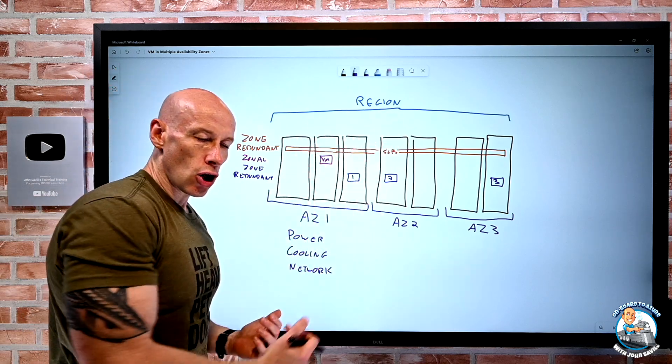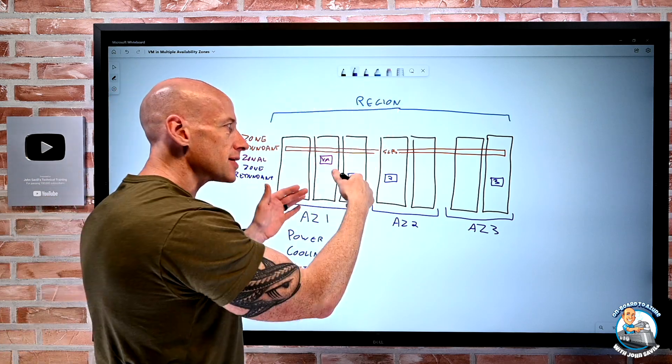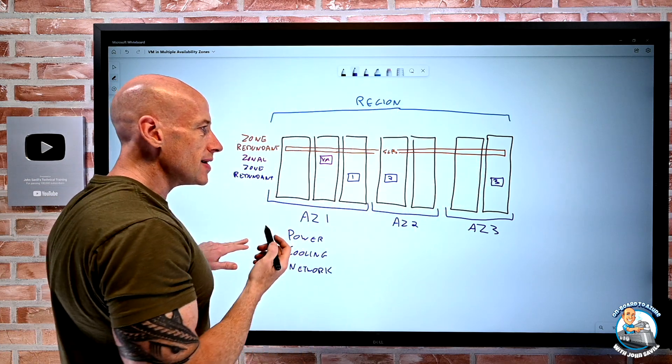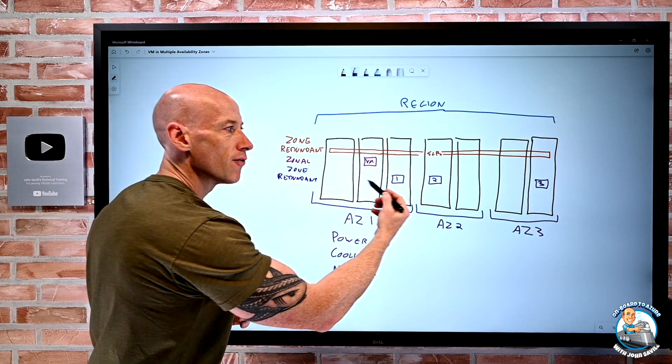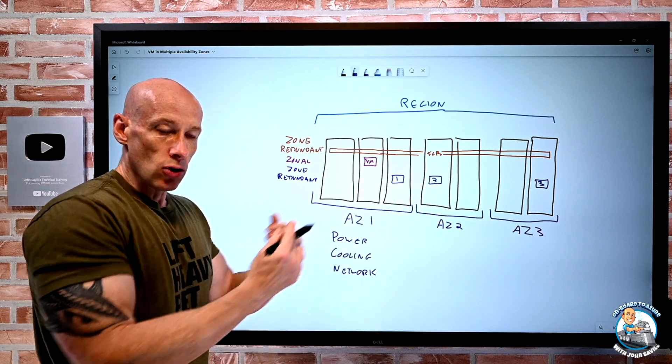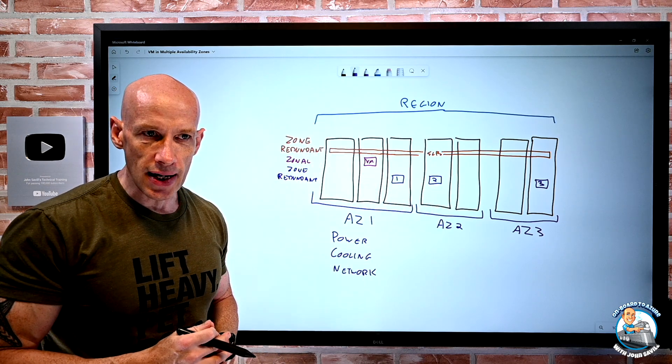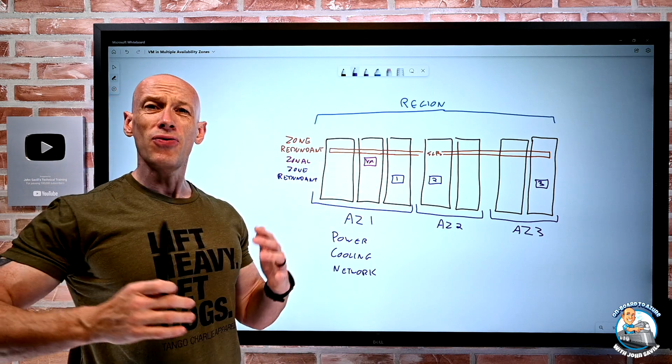And then through something like a standard load balancer or gateway, something else will balance the requests to those instances, check are they healthy or not, and then do this. So things like, again, virtual machine scale sets, AKS node pools that are zone redundant, which use virtual machines scale sets, app service plans all take this model. So hopefully that makes sense.